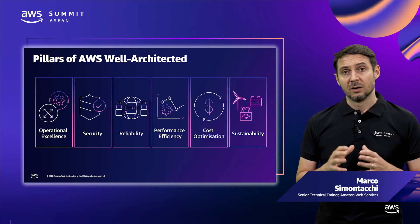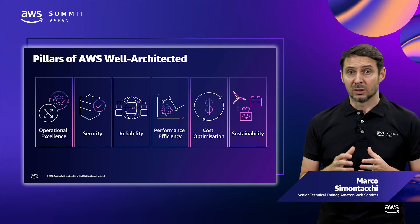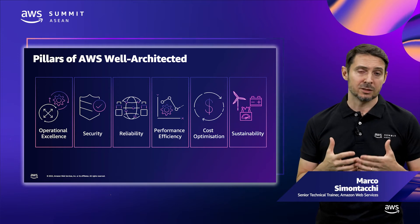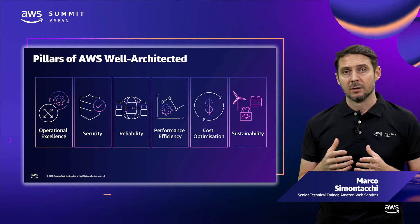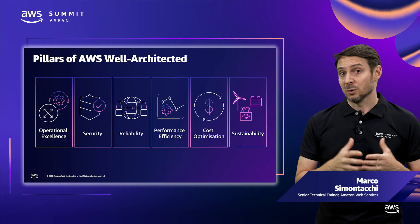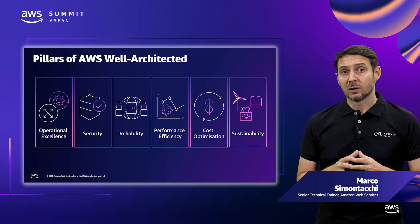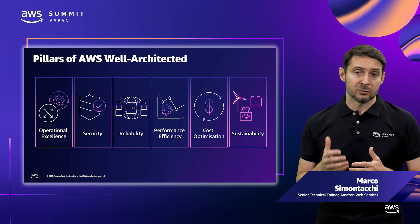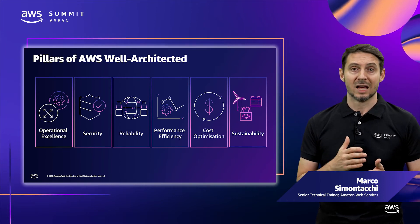The Performance Efficiency pillar focuses on structured and streamlined allocation of IT and computing resources. Key topics include selecting resource types and sizes optimized for workload requirements, monitoring performance, and maintaining efficiency as business needs evolve. The Cost Optimization pillar focuses on avoiding unnecessary costs. Key topics include understanding spending over time and controlling fund allocation, selecting resources of the right type and quantity, and scaling to meet business needs without overspending. The Sustainability pillar focuses on minimizing the environmental impact of running cloud workloads. Key topics include a shared responsibility model for sustainability, understanding impact, and maximizing utilization to minimize required resources and reduce downstream impacts.